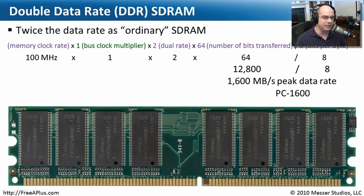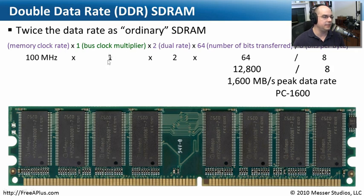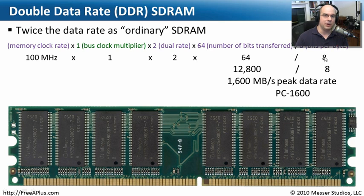To calculate the speeds of DDR, we use a different set of nomenclature because there are many different ways to set up and use the memory. We're not just using the clock rates, because we're essentially doubling the data rate on every clock cycle. The formula is: memory clock rate × bus clock multiplier × 2 (dual rate) × 64 bits transferred, then divide by 8 bits per byte.